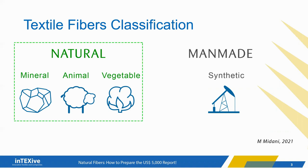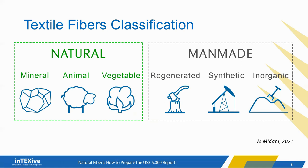Man-made fibers also include inorganic fibers obtained from inorganic sources, such as glass and basalt fibers. And finally, there are regenerated fibers — man-made from naturally existing materials, such as extracting cellulose from wood to make rayon fibers, or extracting protein from milk to make casein fibers.